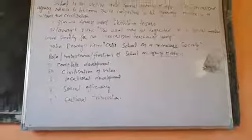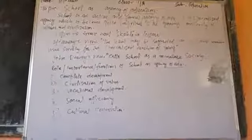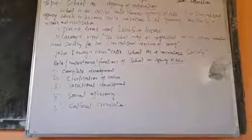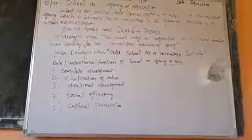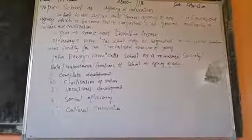The fifth function is cultural preservation. School helps us preserve our culture — it helps us know our roots, understand our past, and understand our culture. When school transfers the culture of the society to the young ones, that culture gets preserved. Simply put, school helps us in cultural preservation. These are the various functions of school as an agency of education.